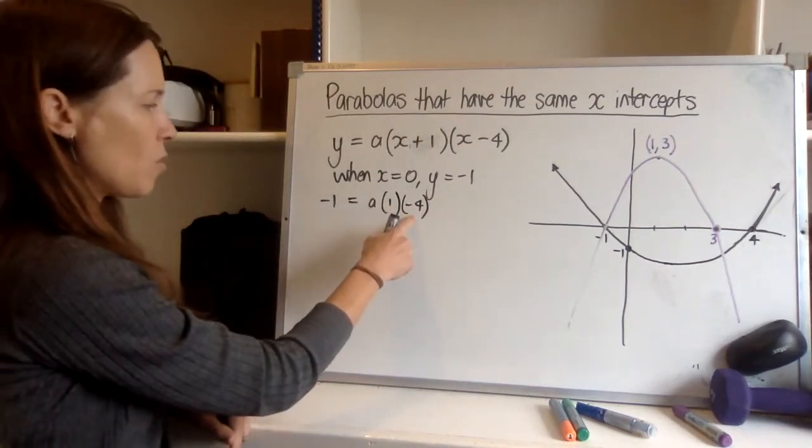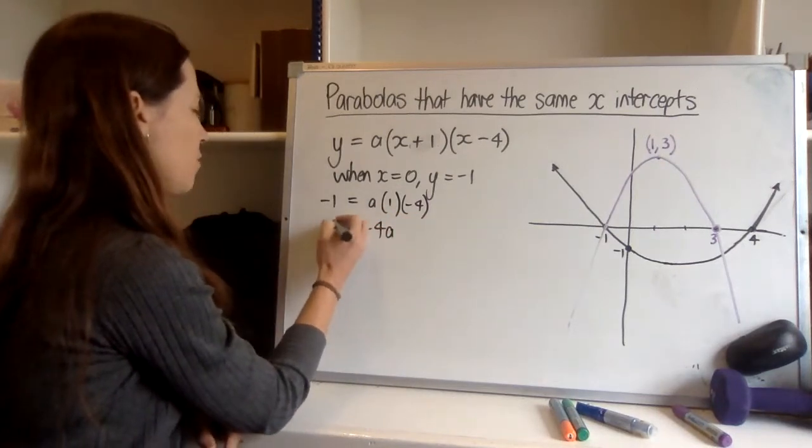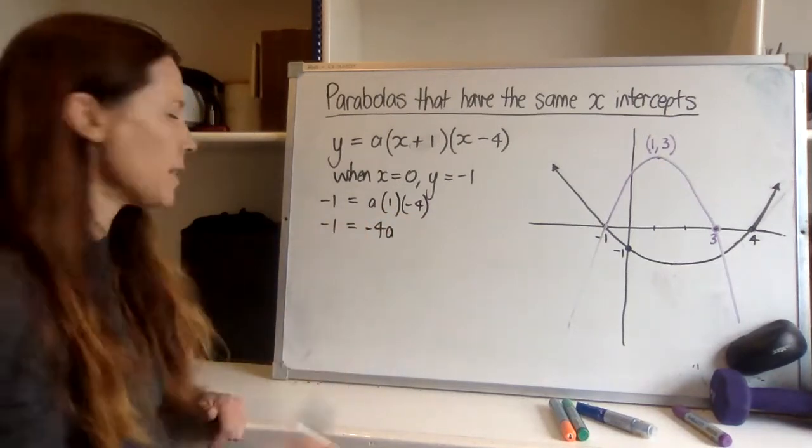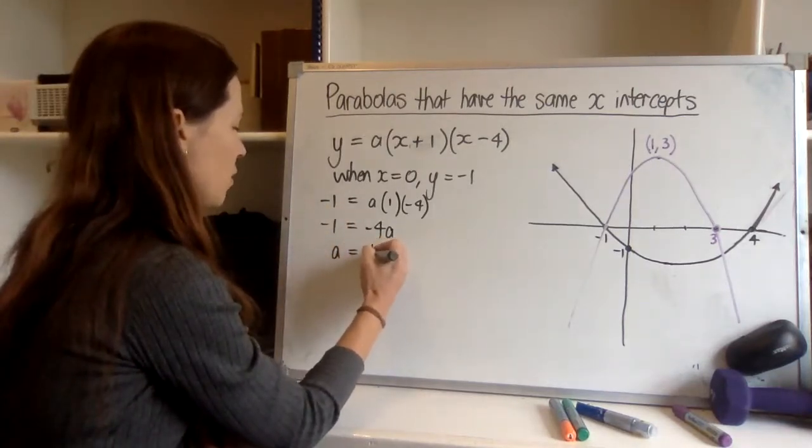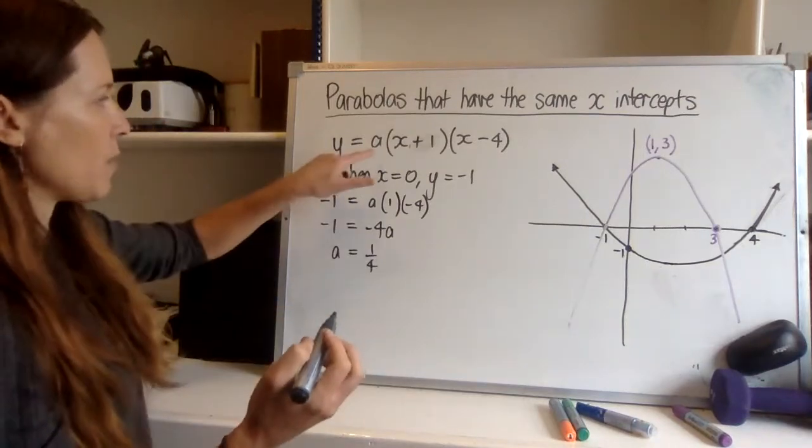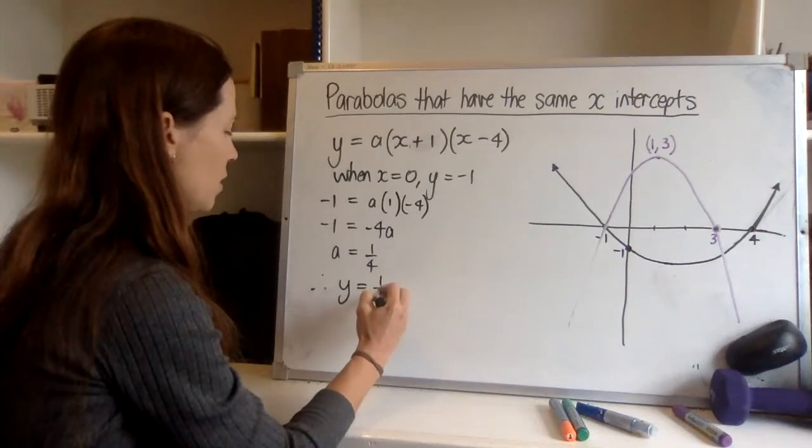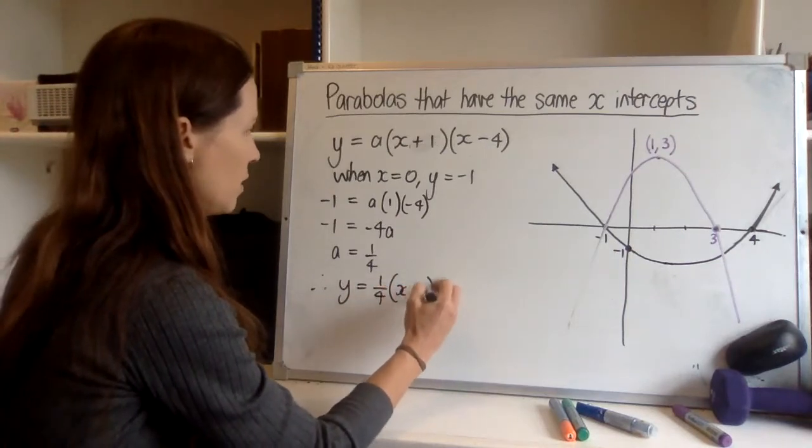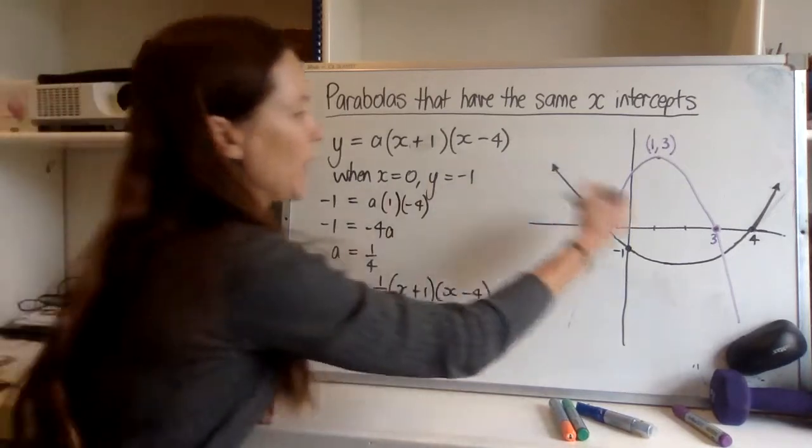So to find what a is, just divide both sides by negative four and a will be one quarter. So now I can go ahead and rewrite this better and say therefore y equals a quarter times x plus one times x minus four, and now I've found the equation of that black parabola.